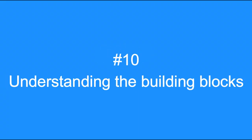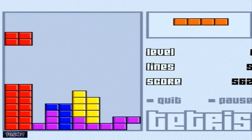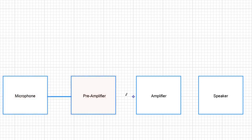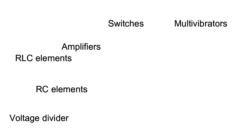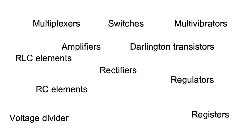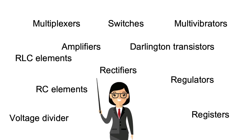Tip number 10: Understanding the building blocks. Circuit designing is like a game of Tetris where you fit individual blocks together to win. You should be aware of individual blocks and their functions, then combine them. Some of these functional blocks include voltage dividers, RC elements, RLC elements, amplifiers, multivibrators, switches, Darlington transistors, rectifiers, regulators, registers, multiplexers, and more. Having a clear understanding of these blocks is necessary to build your desired circuit — understand them, combine them appropriately, and practice a lot.